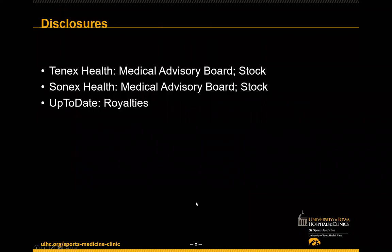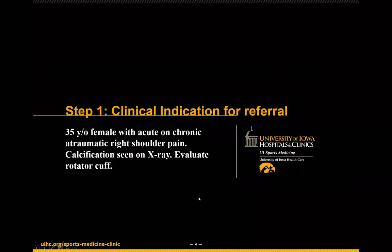Today's cases — a few disclosures from my end, nothing really relevant to our talk. So we'll hop into the case. This is how I walk through a case that comes into my clinic. Step one is finding out what they're here for, so we look for an indication. In this case: a 35-year-old female with acute on chronic atraumatic right shoulder pain, seen by an orthopedic PA. X-rays were performed, a calcification was noted, and she was sent for ultrasound to evaluate the rotator cuff and the presumed symptomatic calcification.